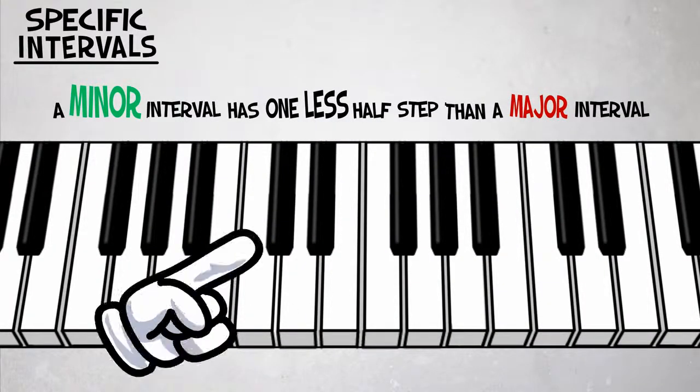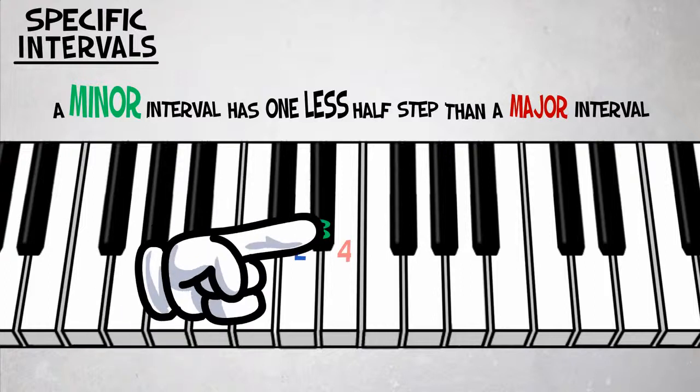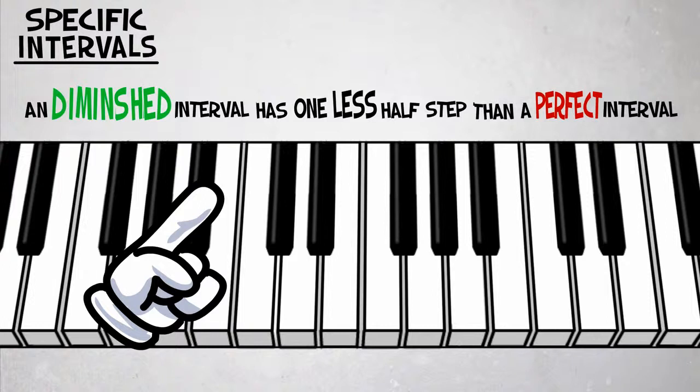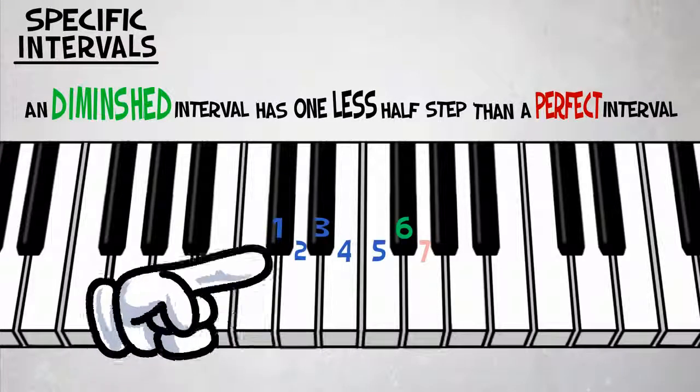A minor interval has one less half step than a major interval. An augmented interval has one more half step than a perfect interval. A diminished interval has one less half step than a perfect interval.